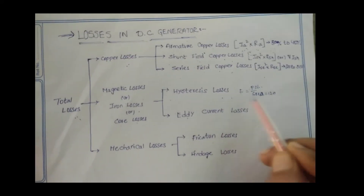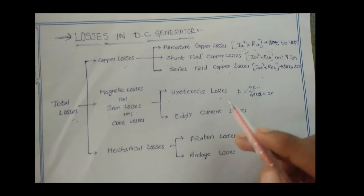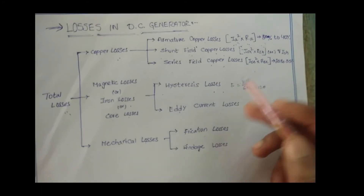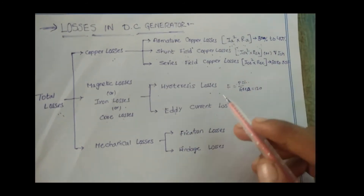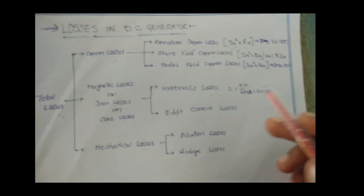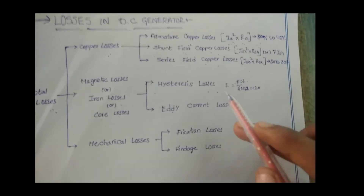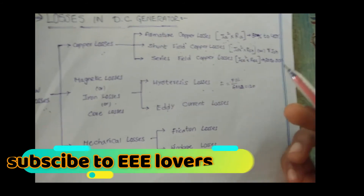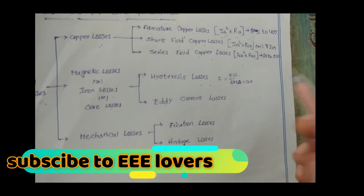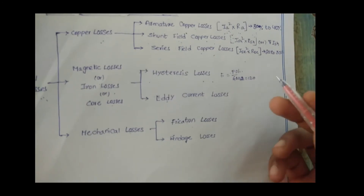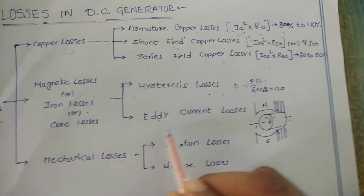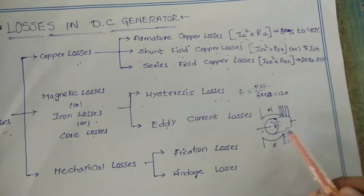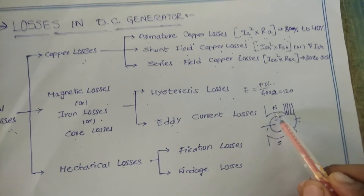Hysteresis losses occur due to the reversal of magnetization of the armature core. Every part of the rotating core passes alternately under the north pole and south pole — from north to south and then south to north — as the armature rotates.